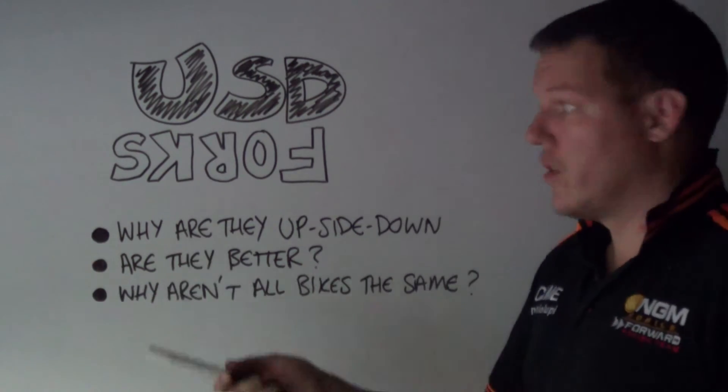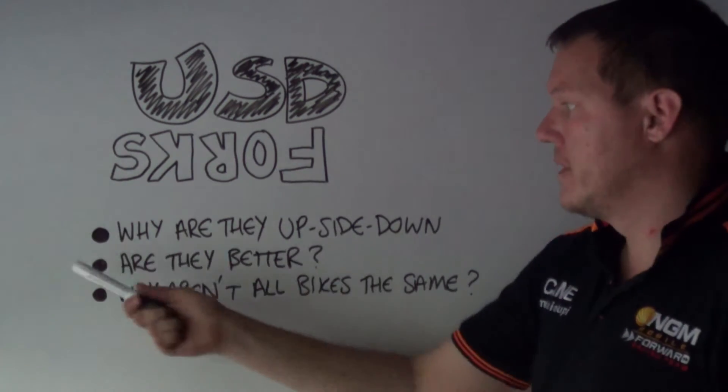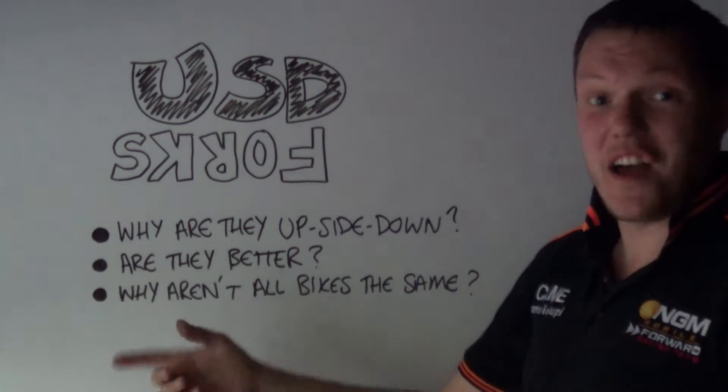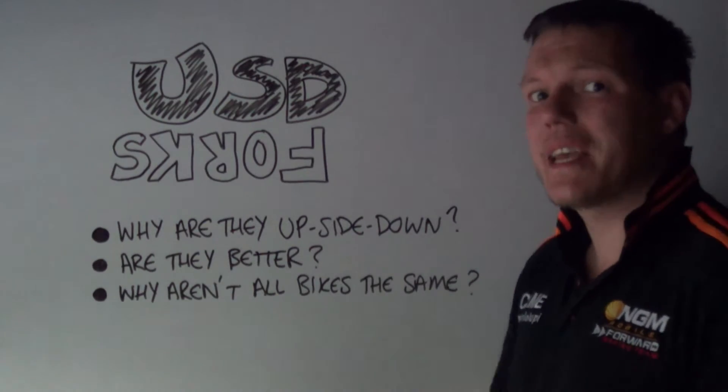As before, we're going to go through why are they upside down, are they even better, and why aren't all bikes the same?